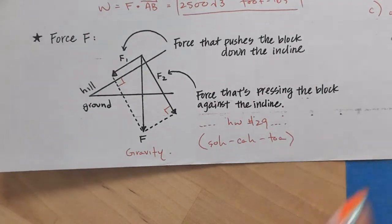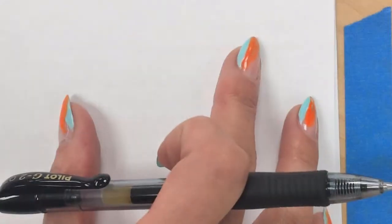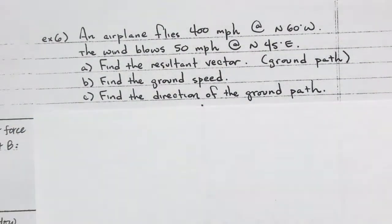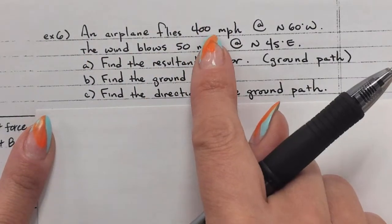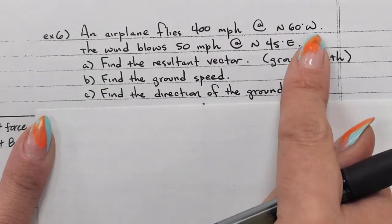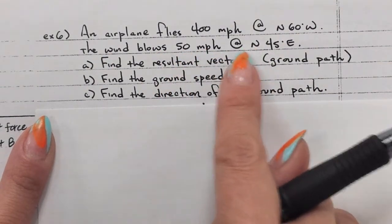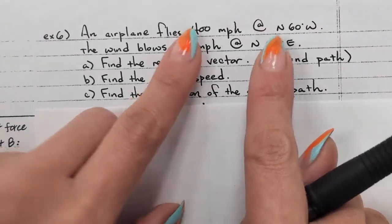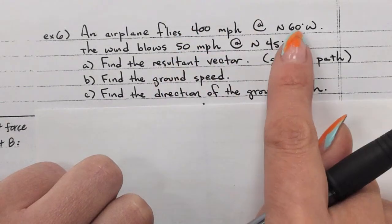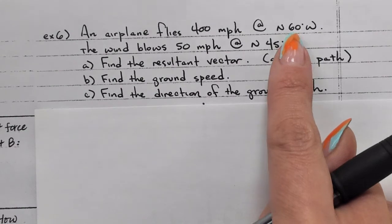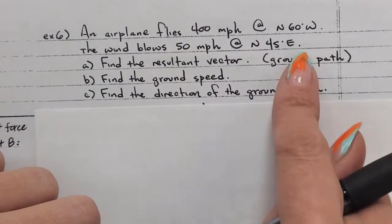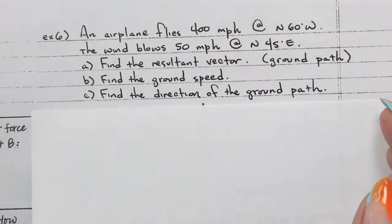Here's the last one — this might turn into your favorite. An airplane flies 400 miles per hour at a bearing of N60°W, and the wind blows 50 miles per hour at a bearing of N45°E. We're using 400 as the speed — the magnitude — and then using the bearing for direction. We're going to draw this situation and then find a resultant vector.